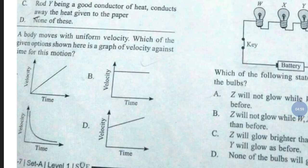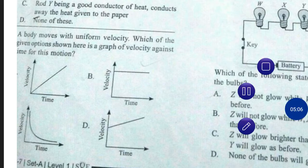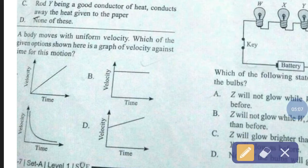Question number 14. A body moves with uniform velocity. Which of the given options shown here is a graph of velocity against time for this motion? The correct answer is option number B.